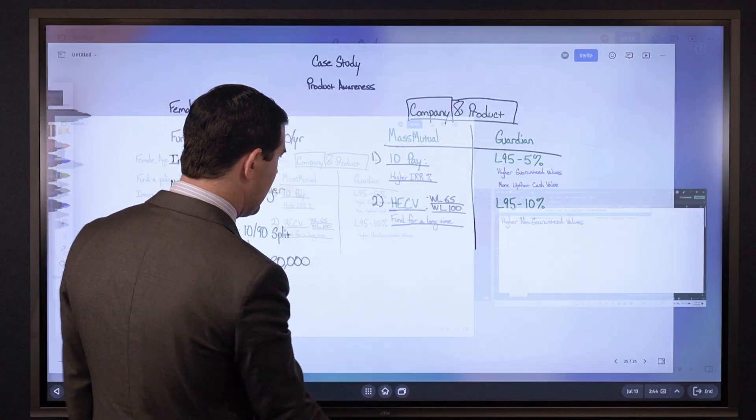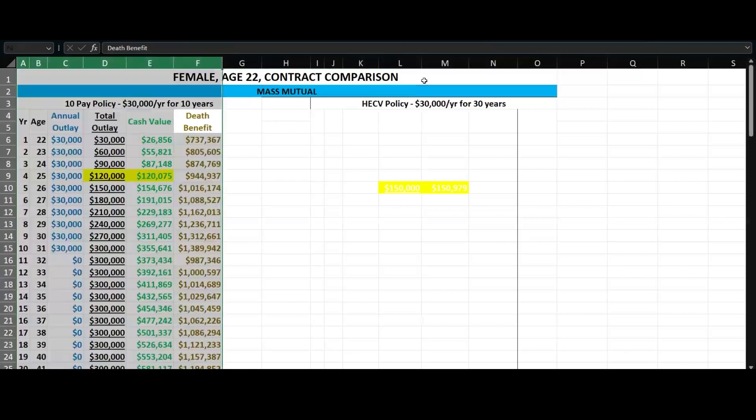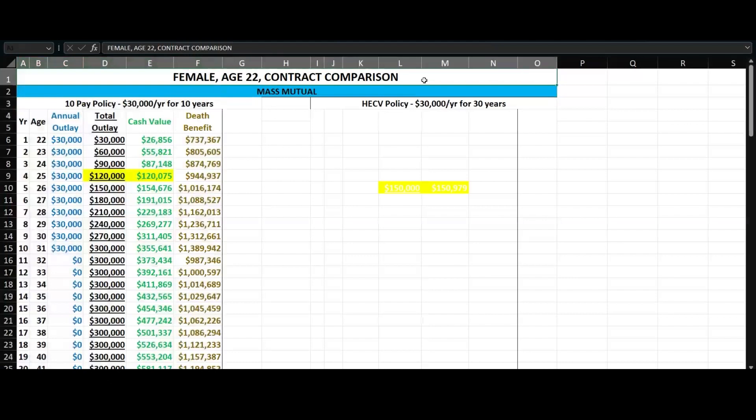Let's look at our 10-pay first. We've got $30,000 per year for 10 years and this is a 10-90 split. $30,000 in the first year, cash value about $27,000, death benefit $737,000, that gives her a MEC limit of a little over $30,000. Now look at year 2. She pays in $30,000. In year 1 it was $26,000 almost $27,000, and then year 2 after she's paid the $30,000, it's worth $55,000 almost $56,000.